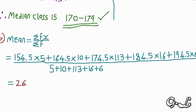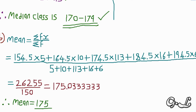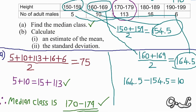When we do the calculations, the numerator gives us 26,255 and the denominator gives us 150. Dividing gives 175.0333... We round this to 3 significant figures, giving 175. This is how you are supposed to score marks in an exam.